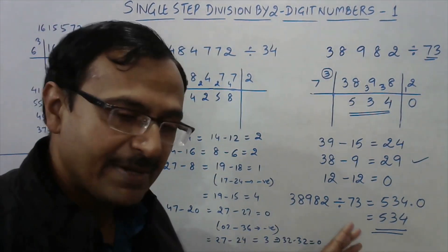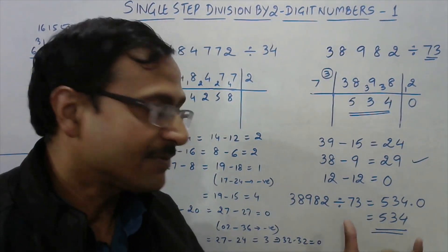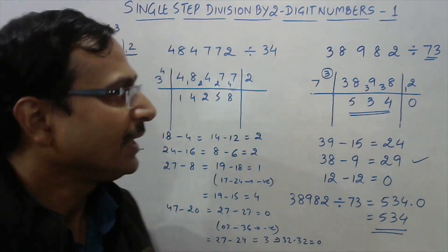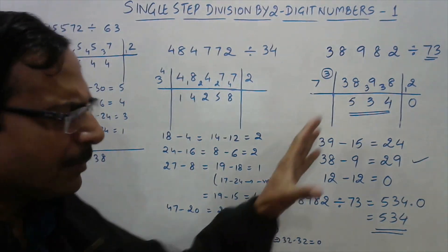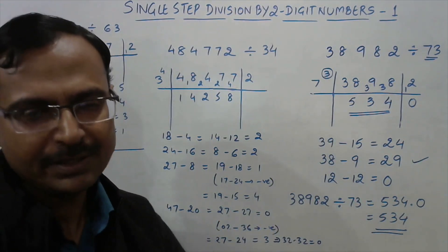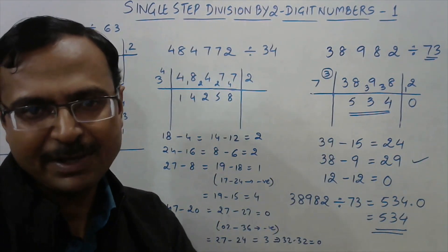This gives us the quotient 534.0, or simply 534 as the answer to 38982 divided by 73. It is a little complicated, I understand, but practice makes a man perfect and we need to practice this method to attain mastery.